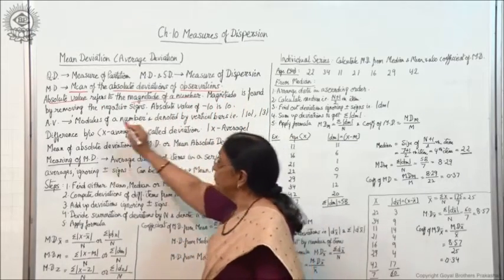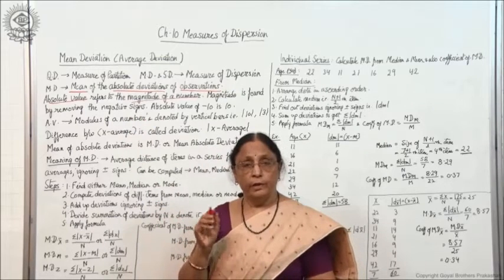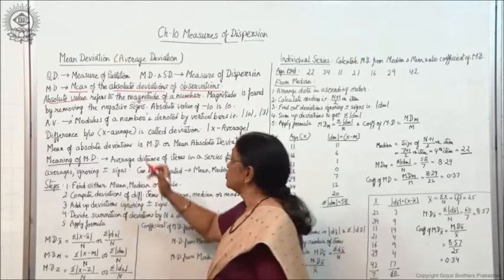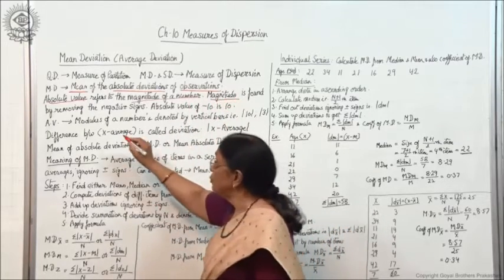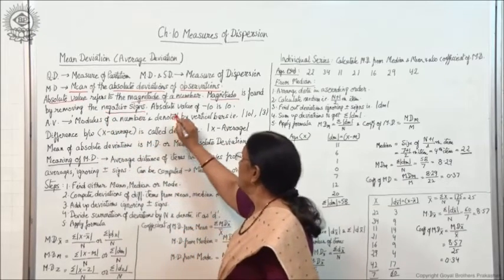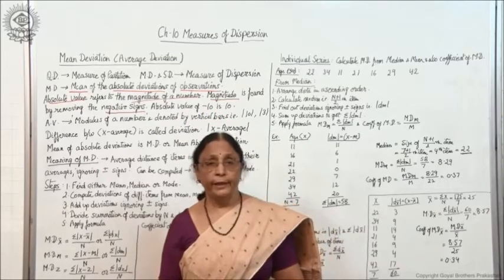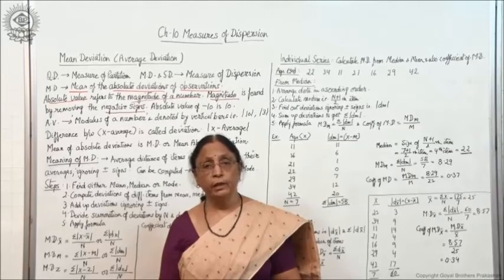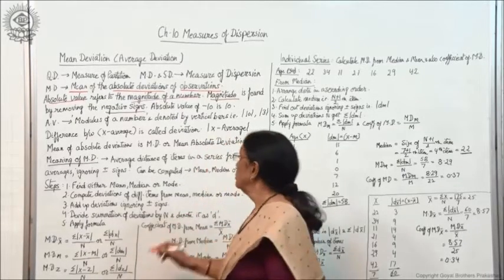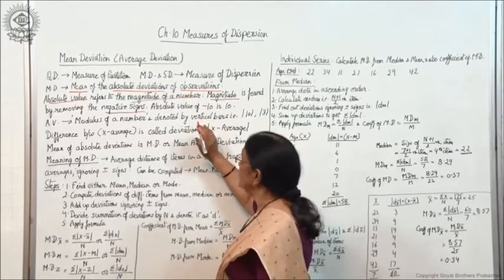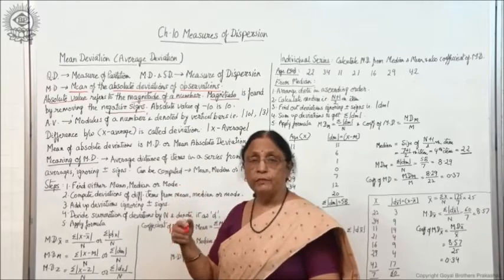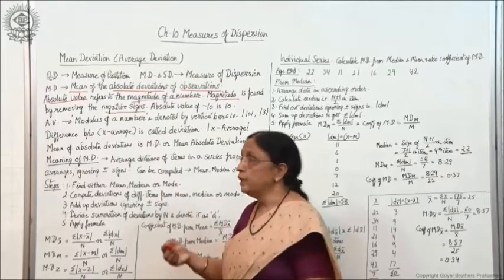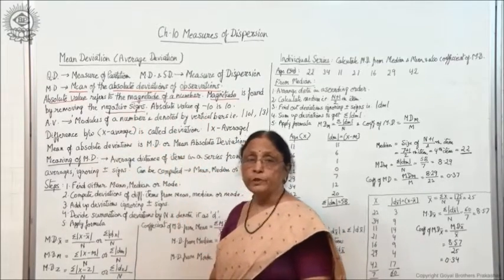Magnitude is found by removing the negative signs. In the case of magnitude, we ignore plus and minus signs. So the absolute value of minus 10 will be 10 — you ignore the minus sign. In mean deviation, we ignore all minus signs; we take all values as positive values, and these positive values are known as absolute values.